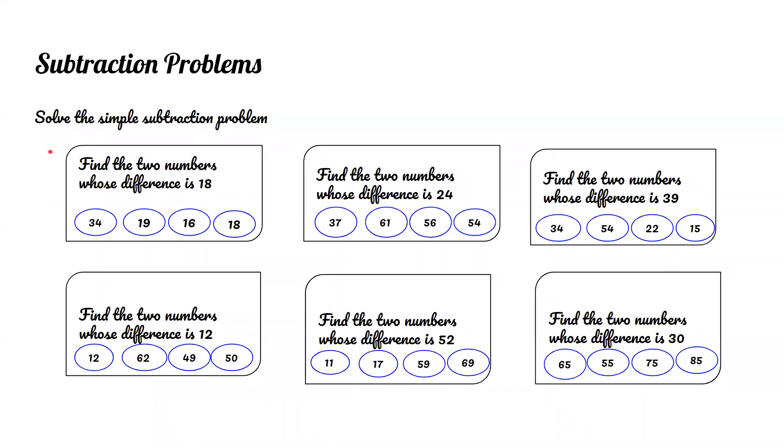Subtraction problems. Solve the simple subtraction problem. Find the two numbers whose difference is 18. Let's start with the highest number. In these four numbers, the highest is 34. So let's start subtracting. 34 minus 19 equals 15. So that's not 18. 34 minus 16 equals 18. But just to be sure, we'll also check the last answer. 34 minus 18 equals 16. So the answer for this problem is 34 and 16.